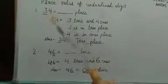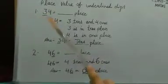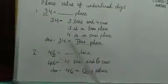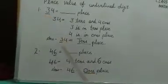But here it is asking about the underlined digit. Place value of underlined digit. So answer will be tens. Place value of 3 is tens.